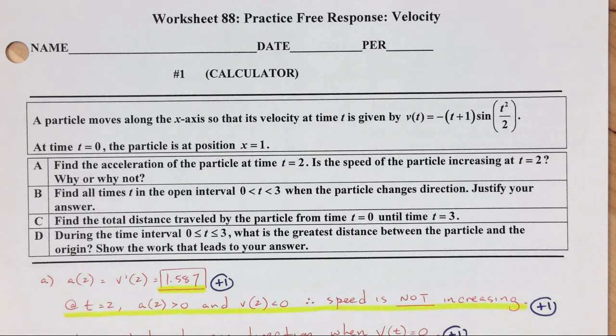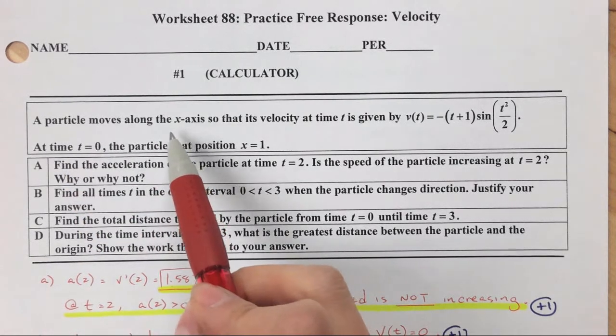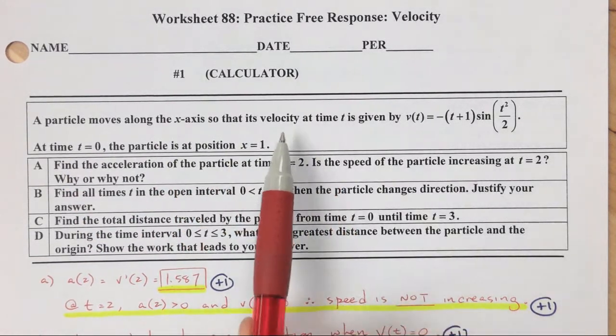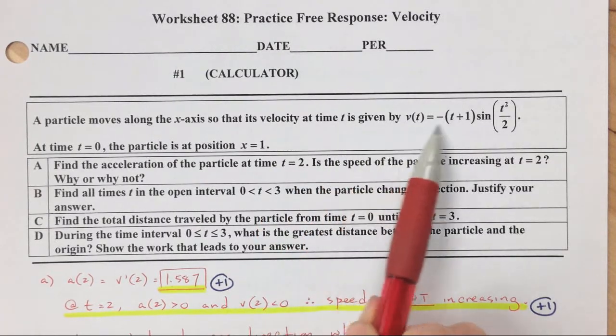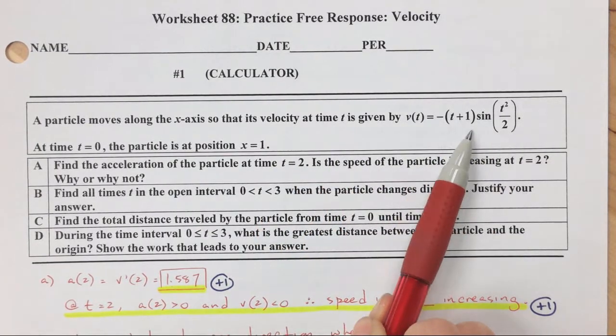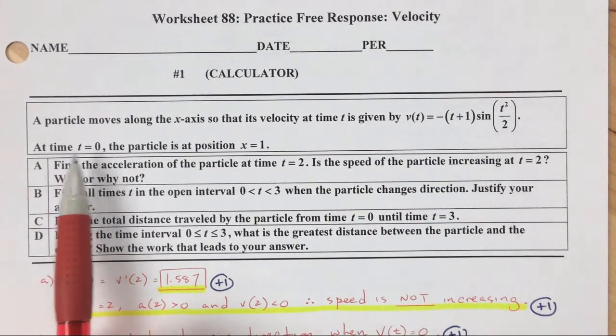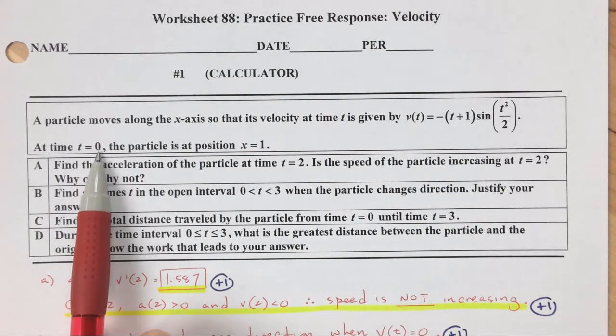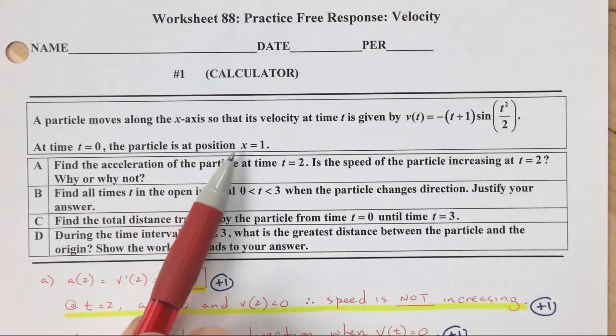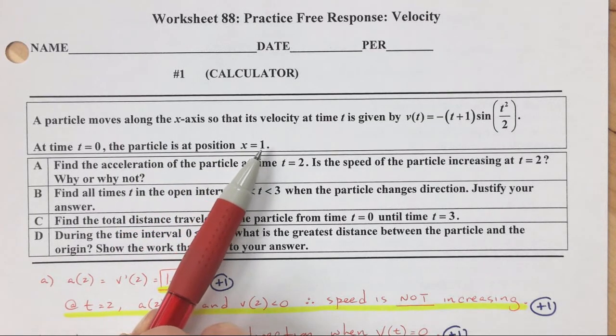All right, so velocity, another calculator question. The particle moves along the x-axis so that its velocity at time t is given by this ugliness, but again, you're going to use a calculator. Okay, this part's really important. At time t equals 0, the particle is at position x equals 1.